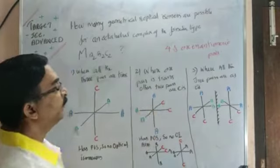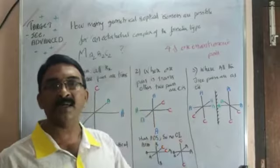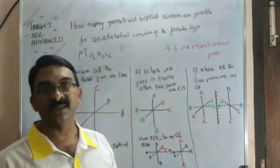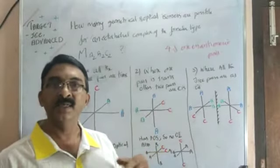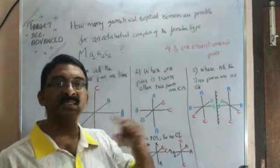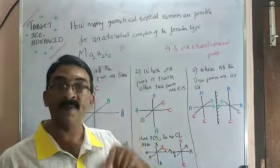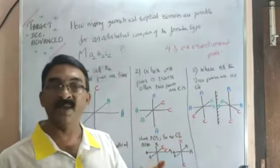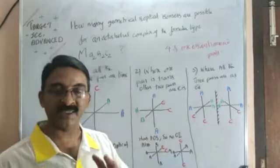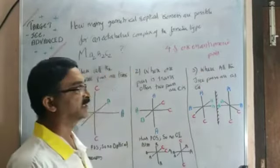Third case, logically next will be where two pairs are trans, the third is cis. That is impossible. If you have two pairs as trans, third also have to be trans. You cannot have two pairs as trans and third pair cis. Such a structure does not exist. So the last case, where all the three pairs are cis.